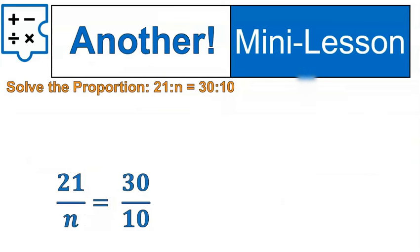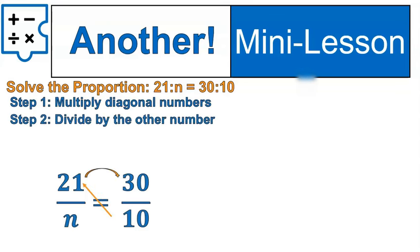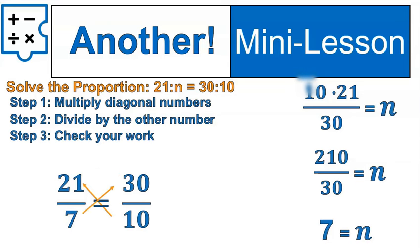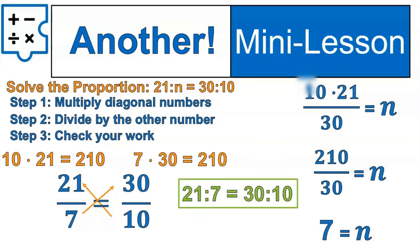Go ahead and solve that proportion. Notice I wrote it in colon form up top and then converted it into fraction form. That's a helpful way for us to realize we can still write these in different ways. Okay. We're going to multiply the diagonal numbers, divide by the remaining number. So that will be 10 times 21 divided by 30. 10 times 21 is 210. We'll divide that by 30 to get 7. 7 goes in there and we check our work using cross multiplying and indeed 21 times 10 is equal to 7 times 30. So our proportion is correct. N is equal to 7.